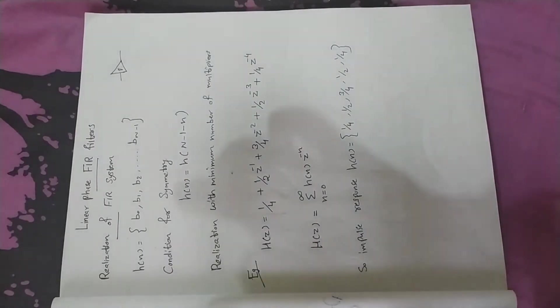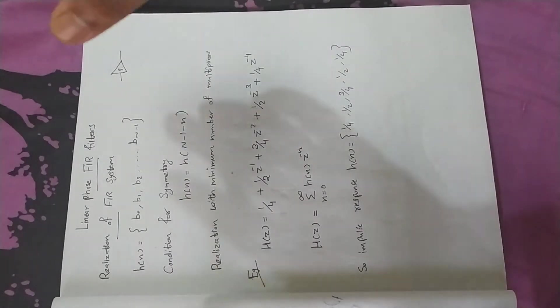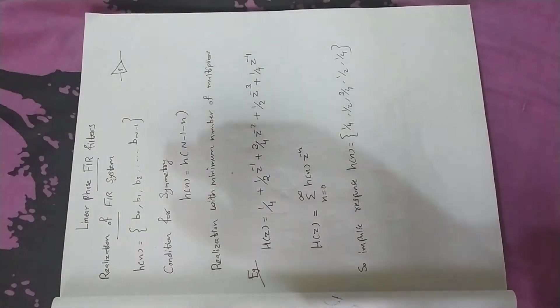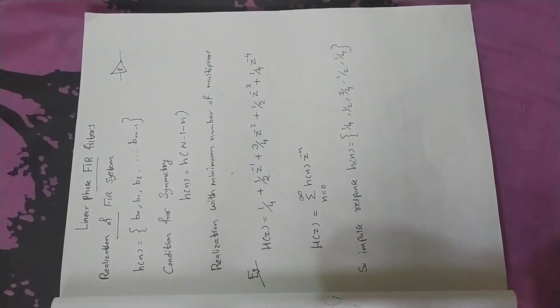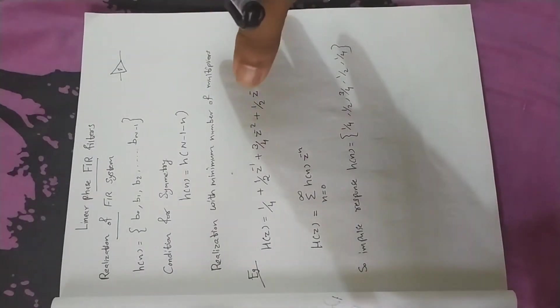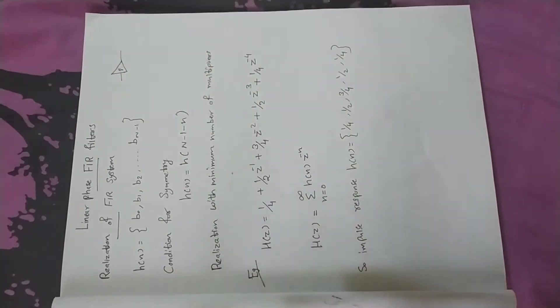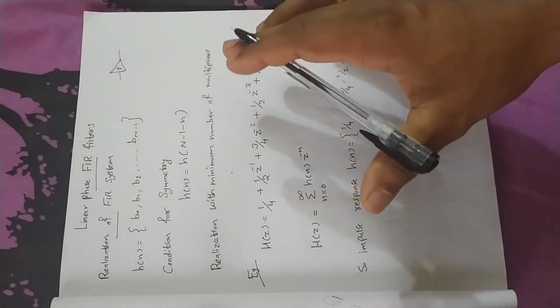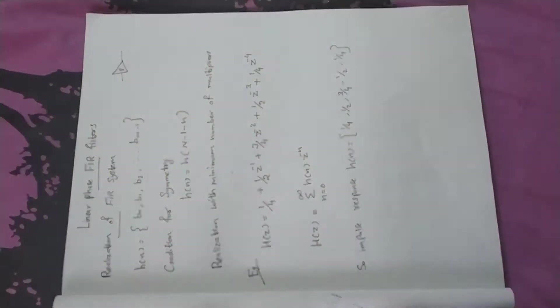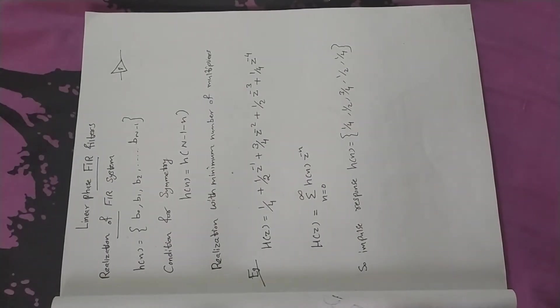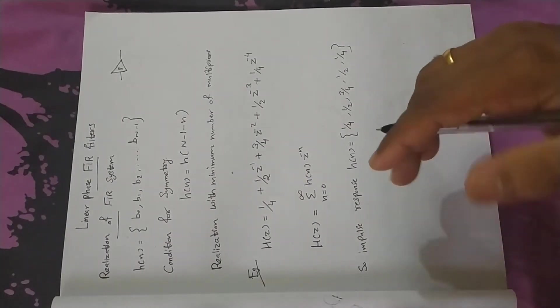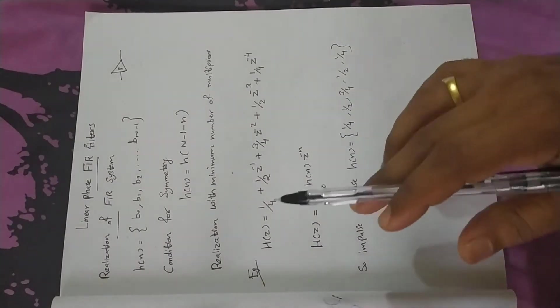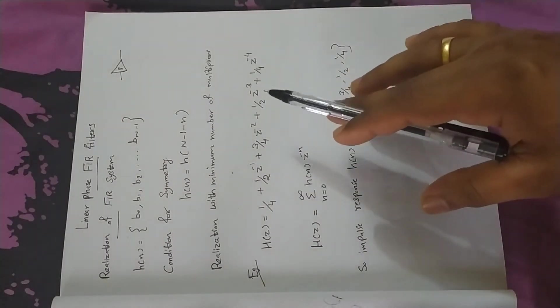We are learning how to use the chip. The multipliers are always minimum. We are learning how to use this aspect.